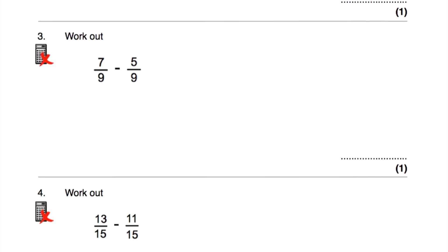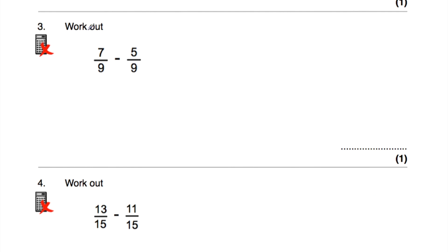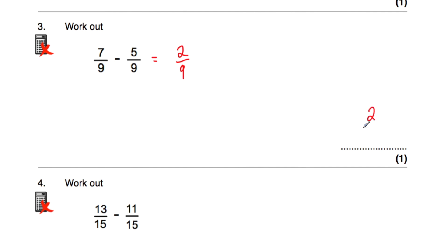Let's have a look at question number three. Question number three says: work out seven ninths subtract five ninths. Well, if we had seven ninths and we took away five of those ninths, we'd be left with two ninths. Whenever we're adding or subtracting fractions with the same denominator, we can just add or subtract the numerators. Seven take away five is equal to two, so the answer is two ninths.